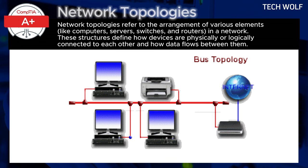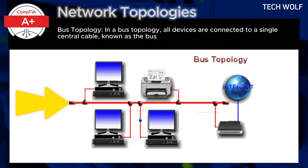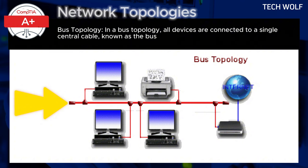The first and simplest topology is a bus topology. In a bus topology, all devices are connected to a single central cable known as the bus. This bus serves as a shared communication medium, allowing all devices to send and receive data over the same cable.